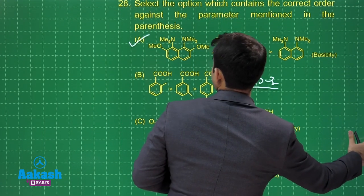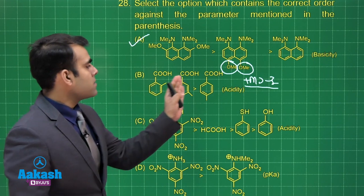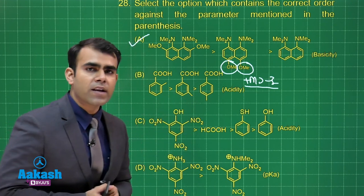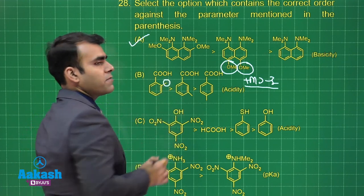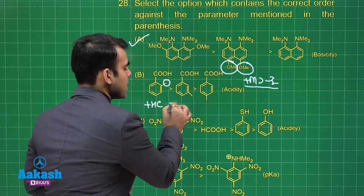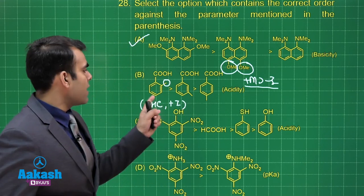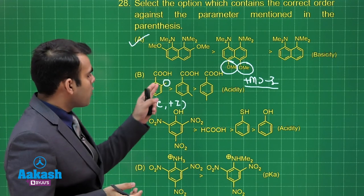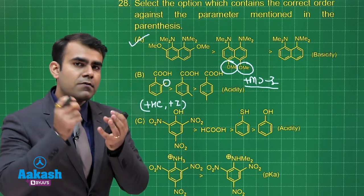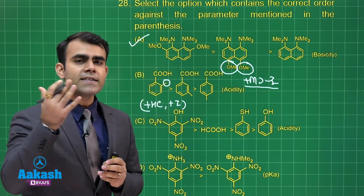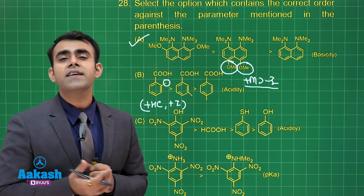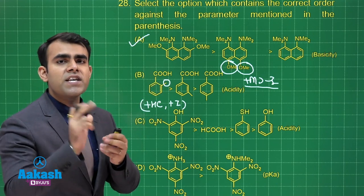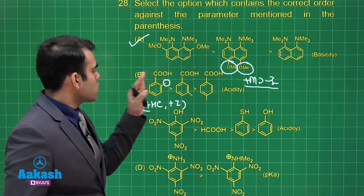Moving on to option B, here we have been given benzoic acid derivatives: 2-methylbenzoic acid, 3-methylbenzoic acid, and 4-methylbenzoic acid. The methyl group shows +HC and +I effects. We also have to consider the ortho effect, which we've seen in aniline and benzoic acid. Because of the ortho effect in benzoic acid, if there is an ortho substituent, it increases acidic strength by making the two resonance structures more stable by changing the plane of the COOH group. So this compound is most acidic.